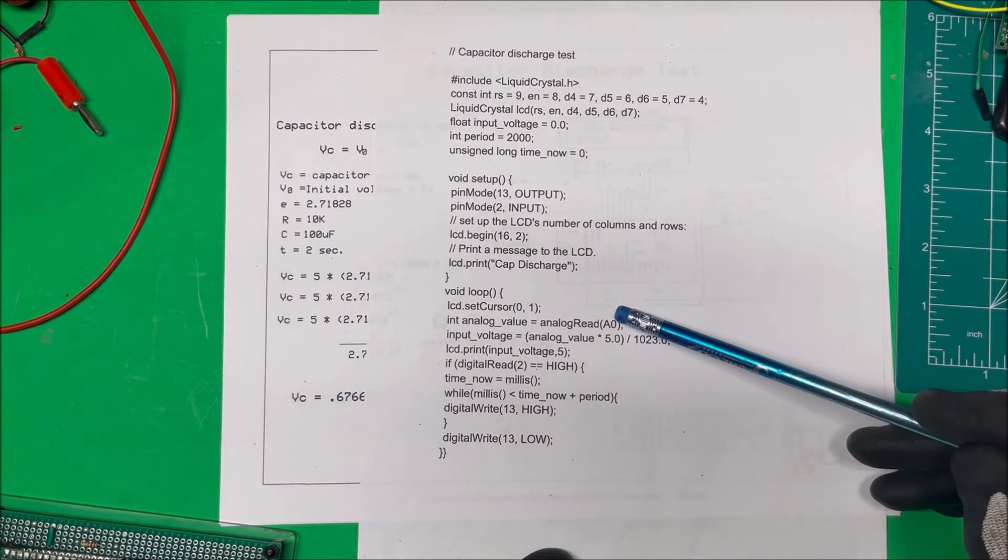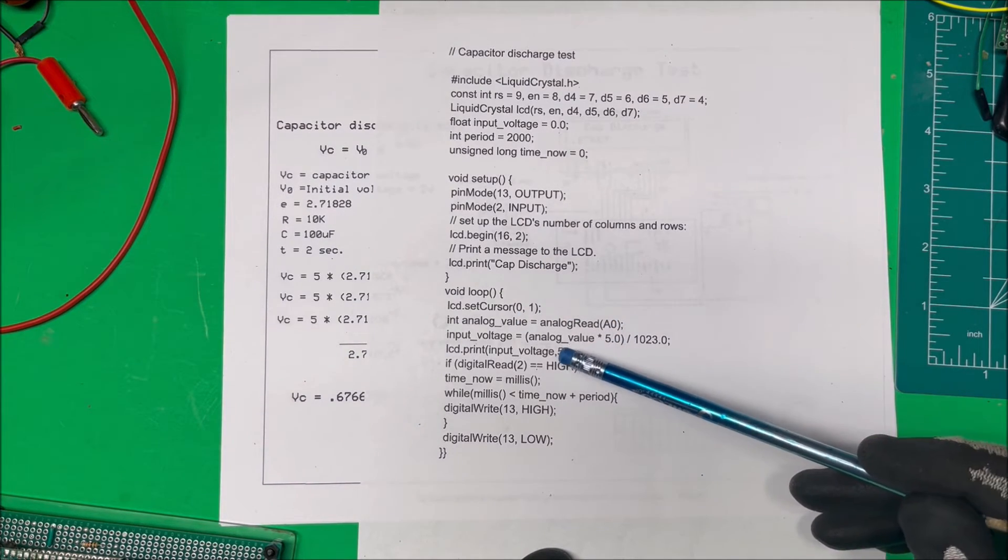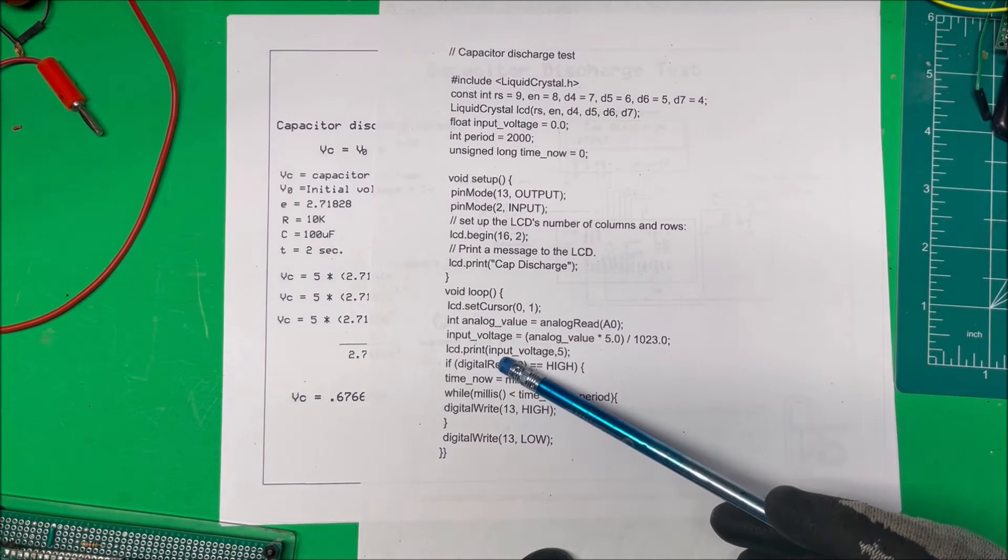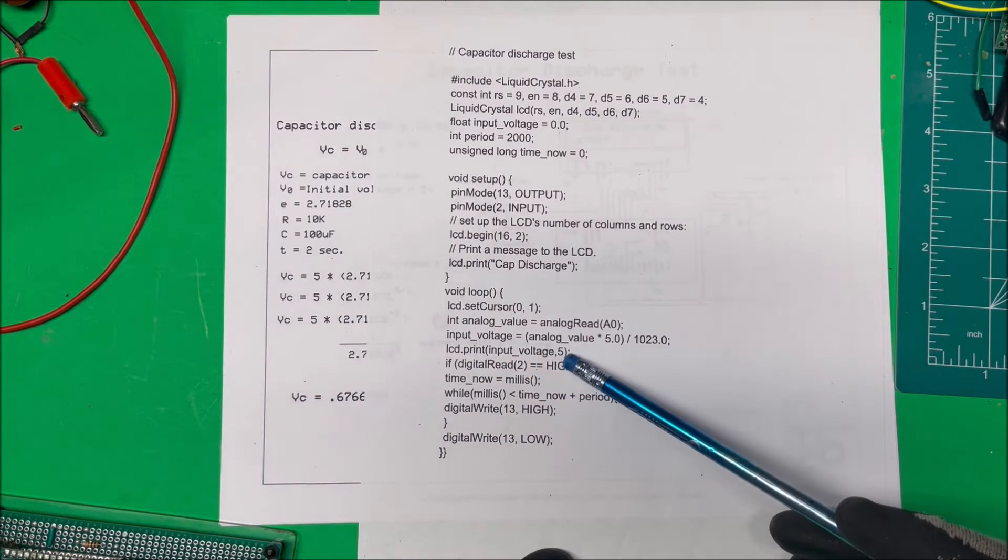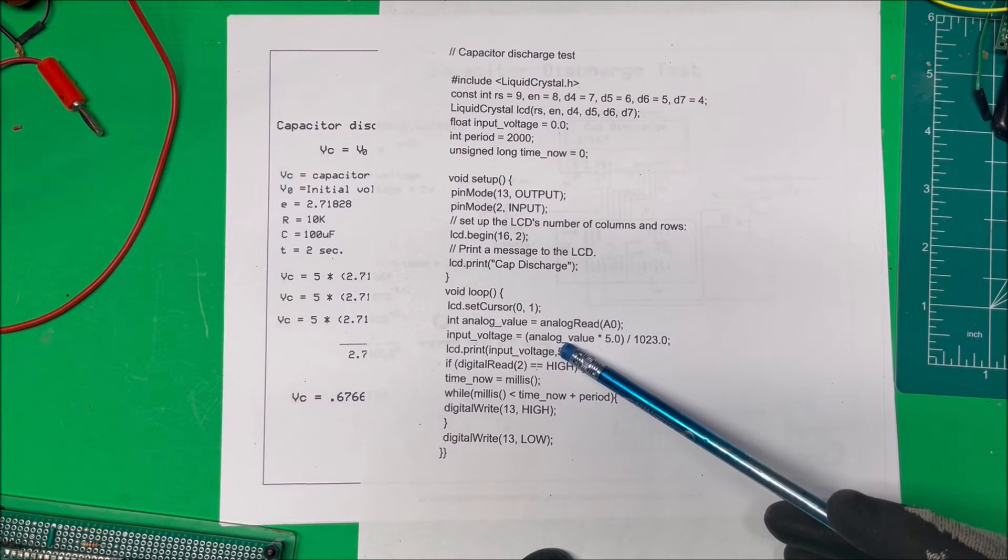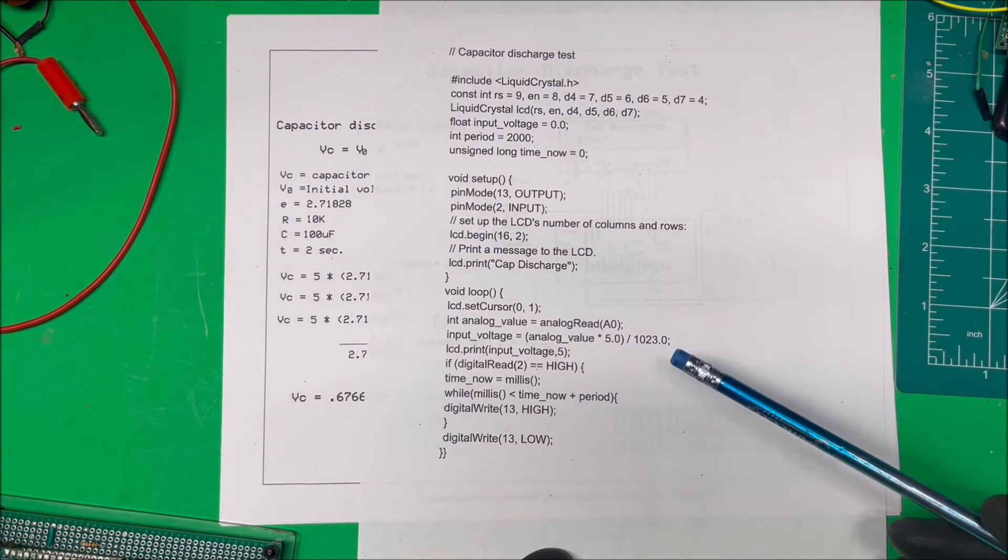And for here we just read the analog voltage here. And now on here when you print the analog voltage, you print the voltage, this comma five, that just means it gives us five decimal places.